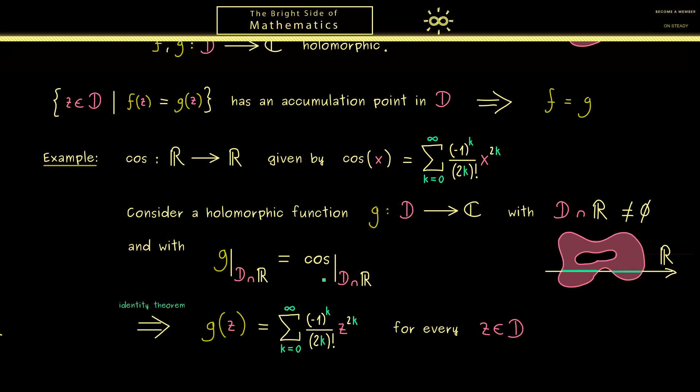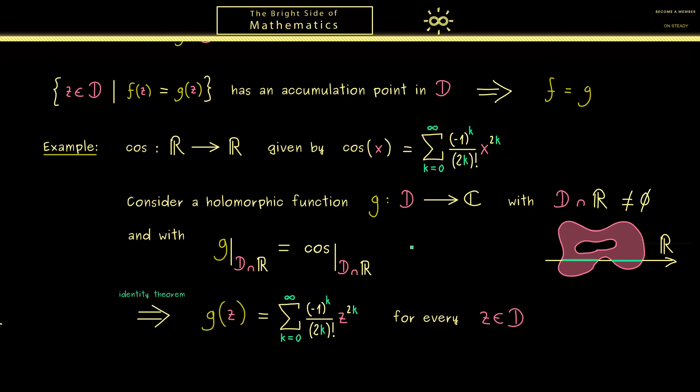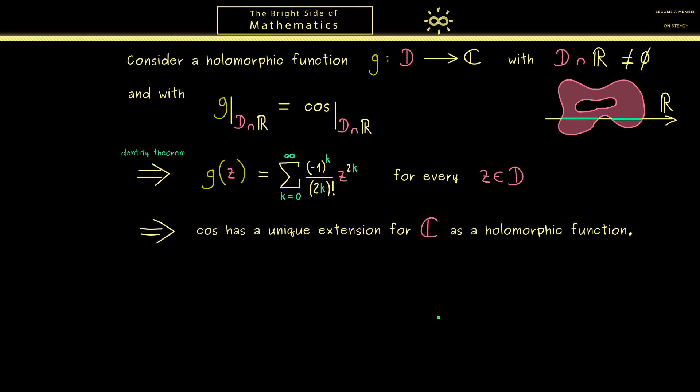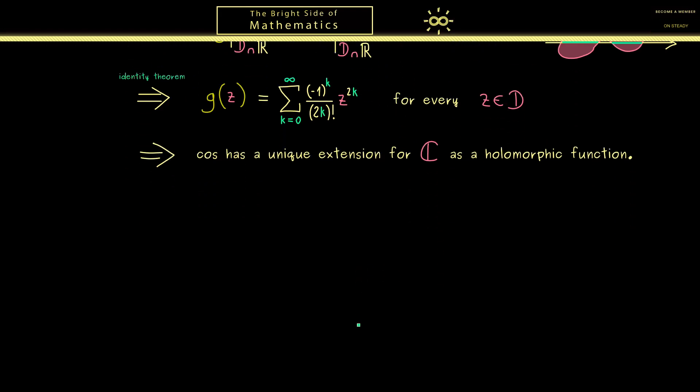In particular, we can extend the cosine function to the whole complex plane in a unique way. This is an important result that comes immediately from the identity theorem. Now you might see we can generalize this example easily. We start with any real function and extend it to a holomorphic function defined on C. It's worth writing down as a general formulation.